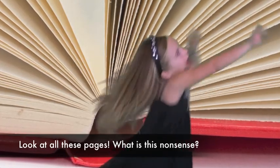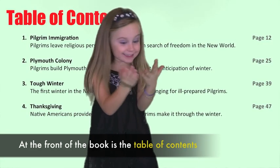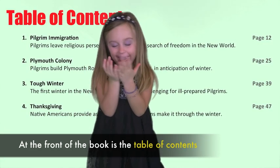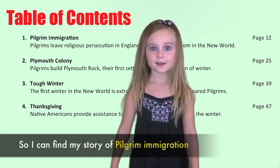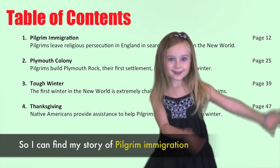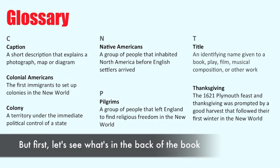What is this nonsense? At the front of the book is the table of contents. It lists chapters and page locations, so I can find my story of pilgrim immigration. But first — what's in the back of the book?